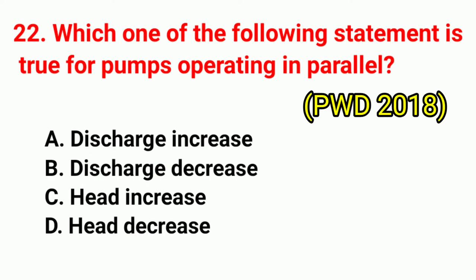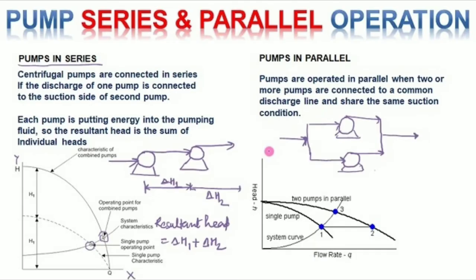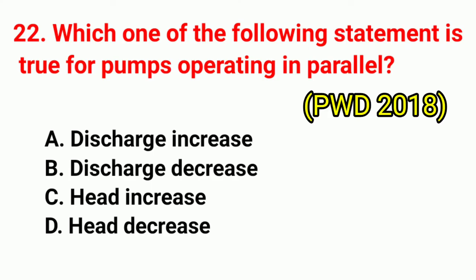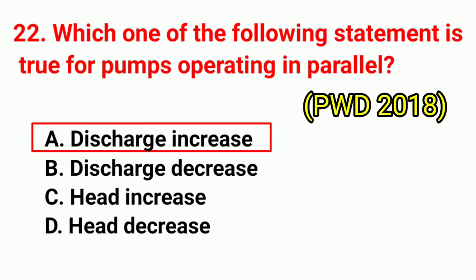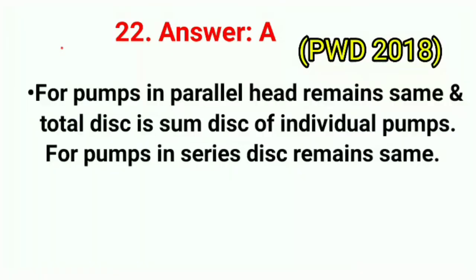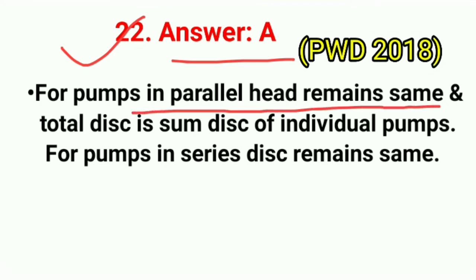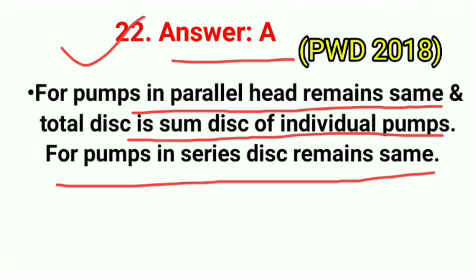Question No. 22. Which one of the following statements is true for pumps operating in parallel? Correct answer is option A: discharge increases. For pumps in parallel, head remains the same and total discharge is the sum of individual pump discharges. For pumps in series, discharge remains the same.